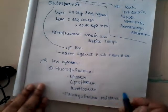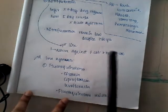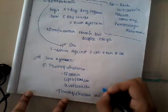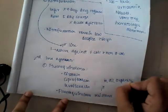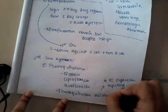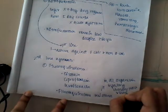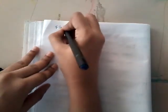Fluoroquinolone resistance is seen not only in uropathogens but also in other infections. Unlike nitrofurantoin, whose resistance is mostly seen only in uropathogens, fluoroquinolone resistance is seen in all organisms infecting the urinary tract and also in systemic infections. Fluoroquinolone use has also been a factor in the emergence of drug resistance.